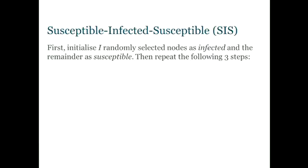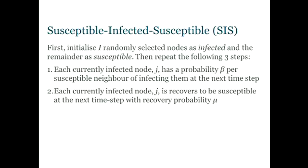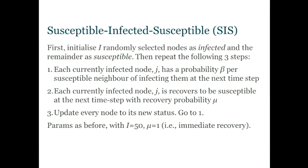So we run a SIS process, a standard disease model. We start out by infecting a random little group of nodes, and then every time step, each node that's infected will at the next time step recover with some probability, and each node that is susceptible has the chance to be infected by any of its neighbors that are infected. And then beta is the probability that one of your infected neighbors will infect you. And we set nu, the recovery probability, to one. So if you're infected, the next time step you will have recovered. So it's like a very mild cold.